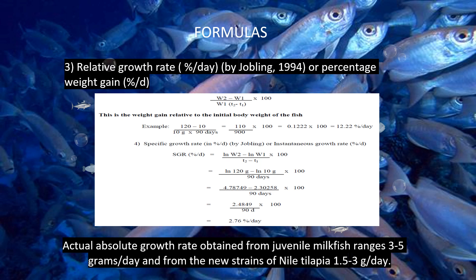The fourth formula is the specific growth rate (SGR) in percent per day, also called the instantaneous growth rate. SGR (percent per day) equals ln(Weight 2) minus ln(Weight 1) over T2 minus T1, times 100. Actual absolute growth rates from juvenile milkfish range 3 to 5 grams per day, and from new strains of Nile tilapia, 1.5 to 3 grams per day.